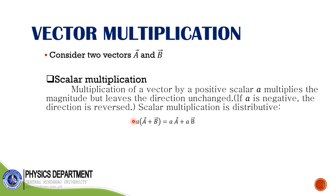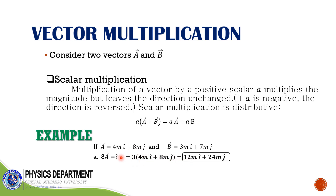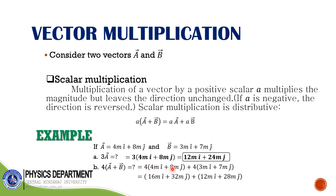Scalar multiplication is distributive — if we have the scalar a multiplied by the vector sum (a + b), you just distribute the scalar a. For example, if a = 4î + 8ĵ and b = 3î + 7ĵ, then 3 times a equals 12î + 24ĵ. Another example: 4 times the vector sum (a + b) gives 28î + 60ĵ.